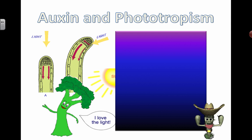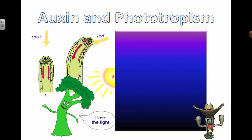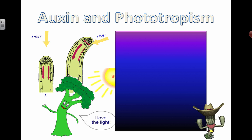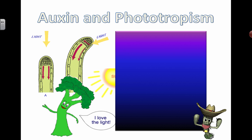In this video, we're going to be talking about a specific hormone. Yes, plants have hormones. I have hormones — I have testosterone, and a little bit of progesterone and estrogen as well. Plants have hormones. There's a bunch. This one we're going to talk about is called auxin, A-U-X-I-N.